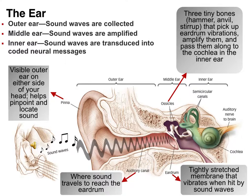Then we have the ossicles — these are actually the smallest bones in your body, good trivia night knowledge. They're typically called the hammer, the anvil, and the stirrup in colloquial terms, and I'll talk about their more scientific names in a minute. What they do is amplify the sound: they take the vibration from the eardrum and amplify it further, then pass that information along to the cochlea in the inner ear through the oval window.